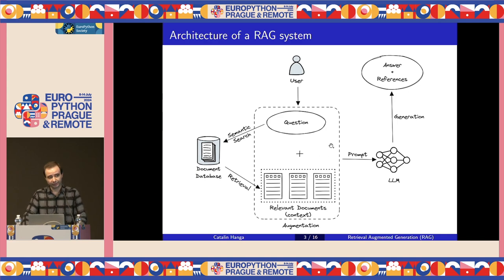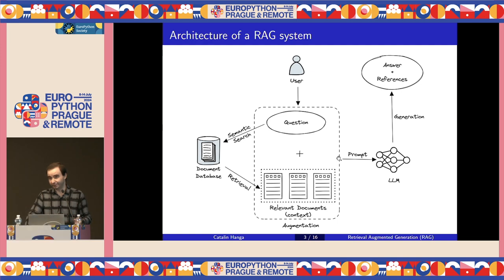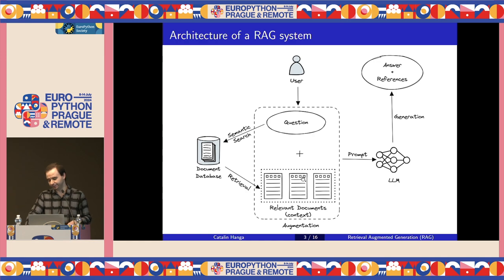In addition to the answer, we could also provide the retrieved documents as a reference list so that the user can check how well the generated answer matches the original sources. Out of all these steps, the retrieval is the most important and difficult one, and in order for the retrieval to be successful, there are a few data pre-processing steps that have to be done in advance.